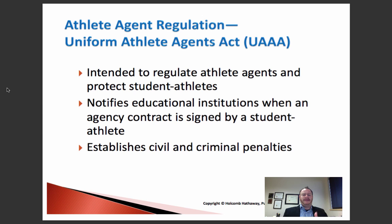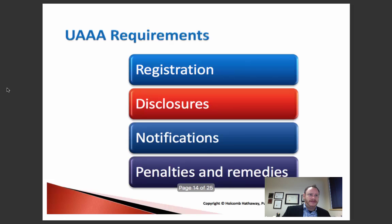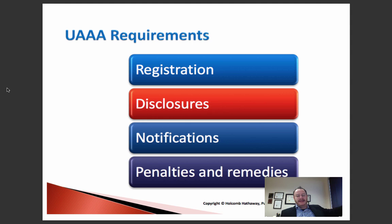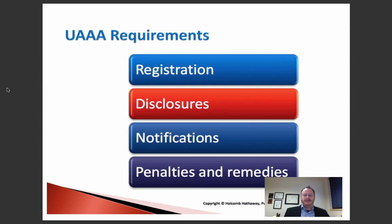There are different elements within the Uniform Athlete Agent Act. One is a notification requirement that requires both athlete agents and student athletes to notify their institution when an agency contract is signed. Failure to abide by the statute can result in criminal and civil penalties. The UAAA was initially a model statute created to address inconsistency — some states had student athlete and agent laws on the books, but they might have been inconsistent, and because unscrupulous agent issues existed throughout the country, there was a public policy interest in having similar laws across states.